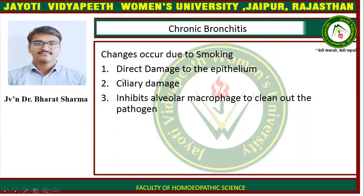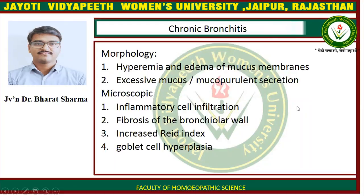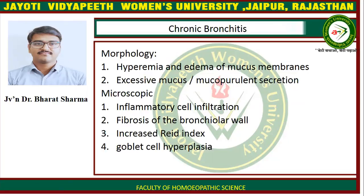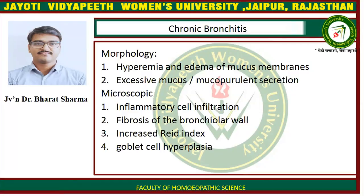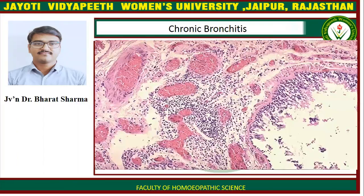Changes that occur due to smoking include: direct damage to the epithelium, ciliary damage, and inhibition of alveolar macrophages from clearing out pathogens. Morphologically, there is hyperemia and edema of the mucous membranes, excessive mucus and mucopurulent secretion. Microscopically, there is inflammatory cell infiltration, fibrosis of the bronchial wall, increased Reid index, and goblet cell hyperplasia. A microscopic examination shows these features of chronic bronchitis with infiltration of neutrophil cells.